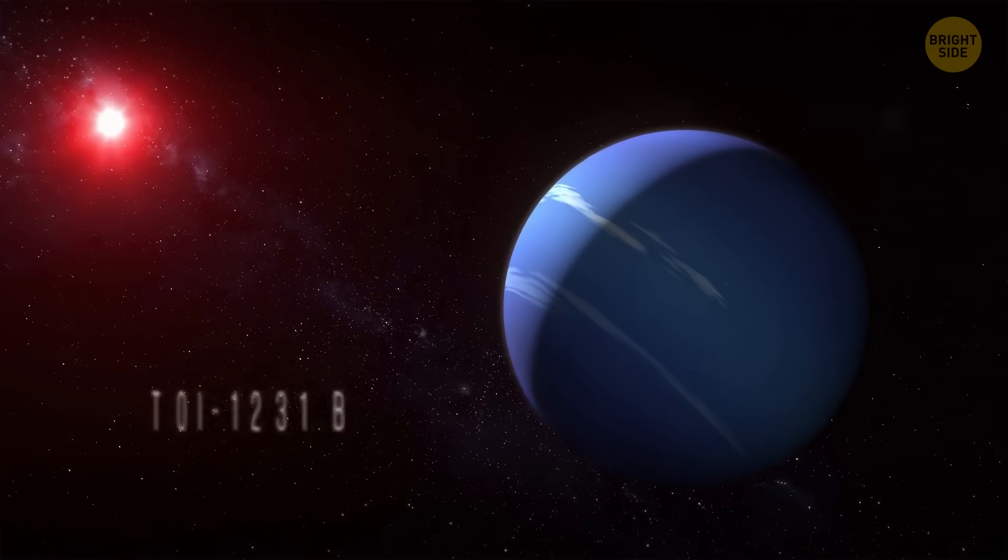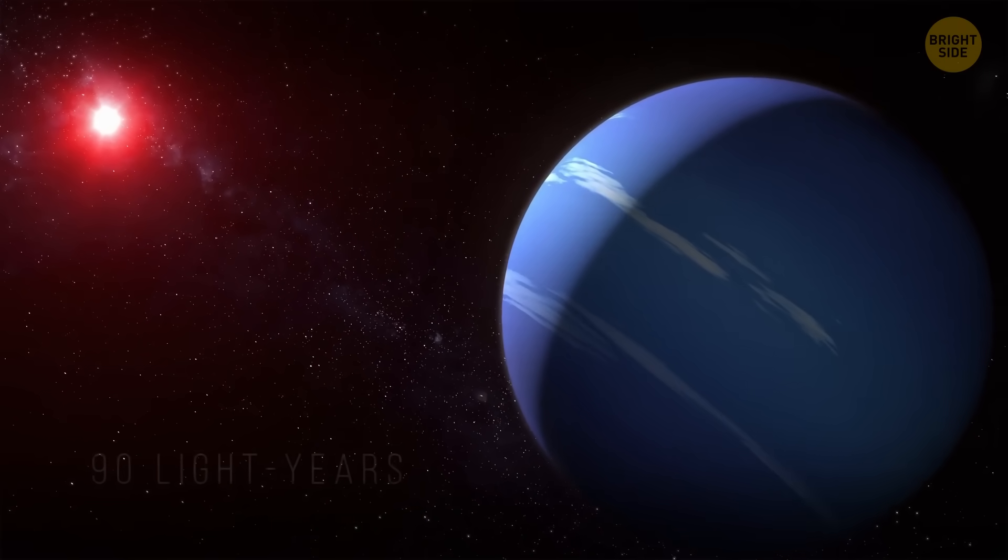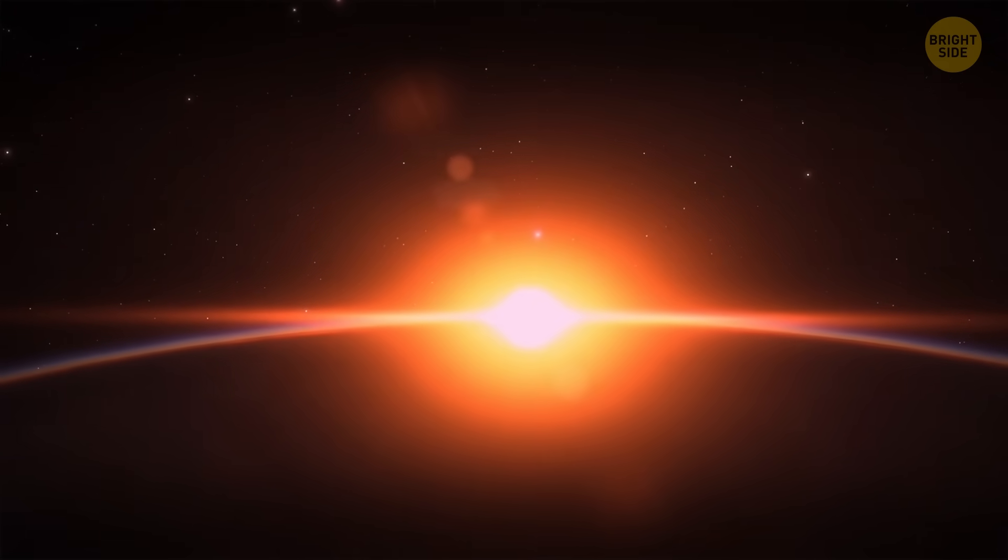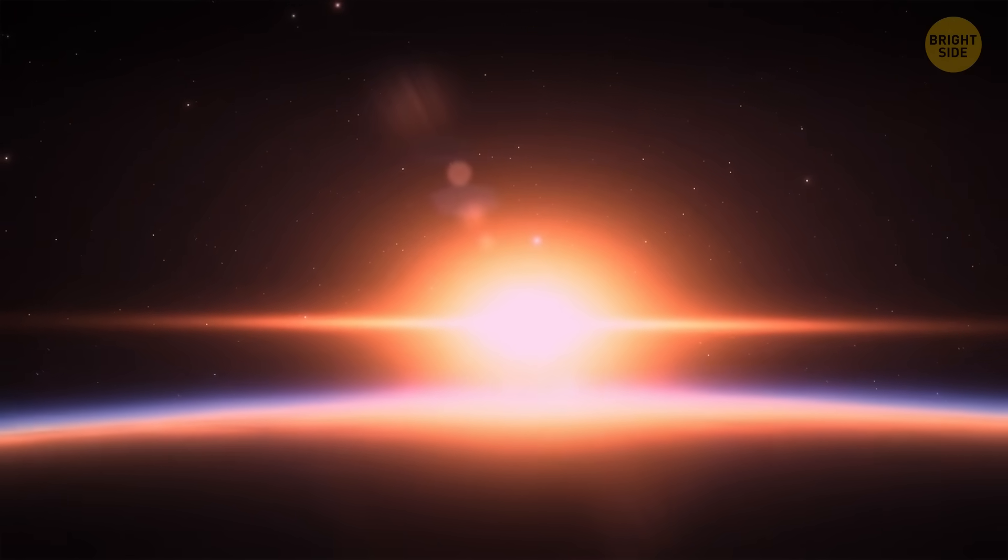There's a planet, TOI-1231b, around 90 light-years away from Earth. It's similar to our Neptune. It's a gas giant, but the most interesting thing is that this planet is likely to be rich in atmosphere.